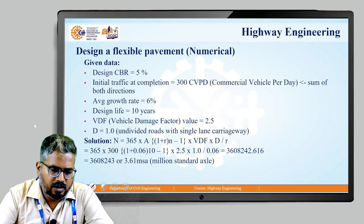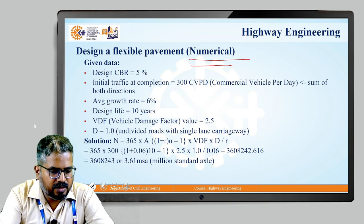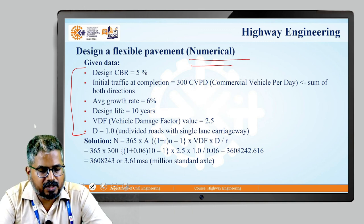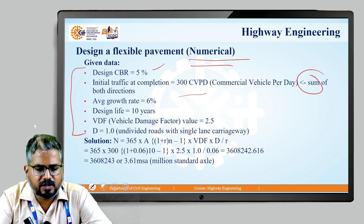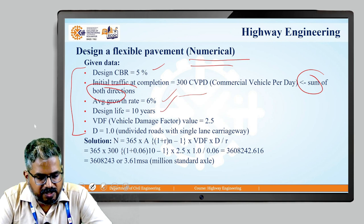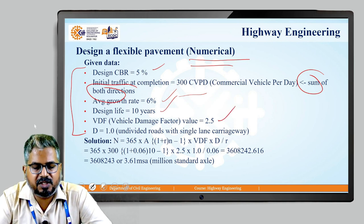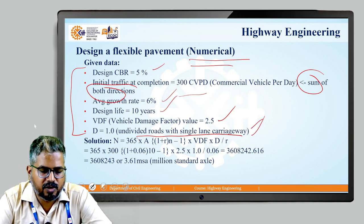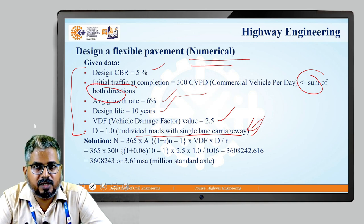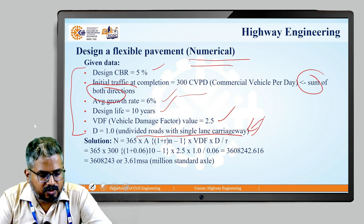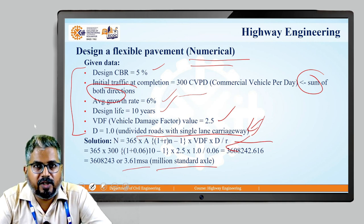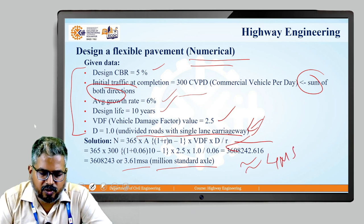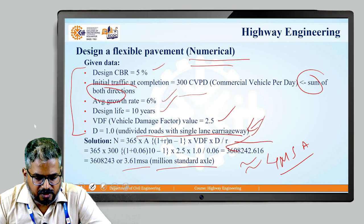Here is a solved example on flexible pavement design. The given data: CBR value = 5%, initial traffic at completion = 300 CVPD (both directions), average annual growth rate = 6%, design life = 10 years, VDF = 2.5, and an undivided road with single-lane carriageway where D = 1. Applying the formula, N came out to be 3.61 MSA, which is approximated to 4 MSA for easier calculation.